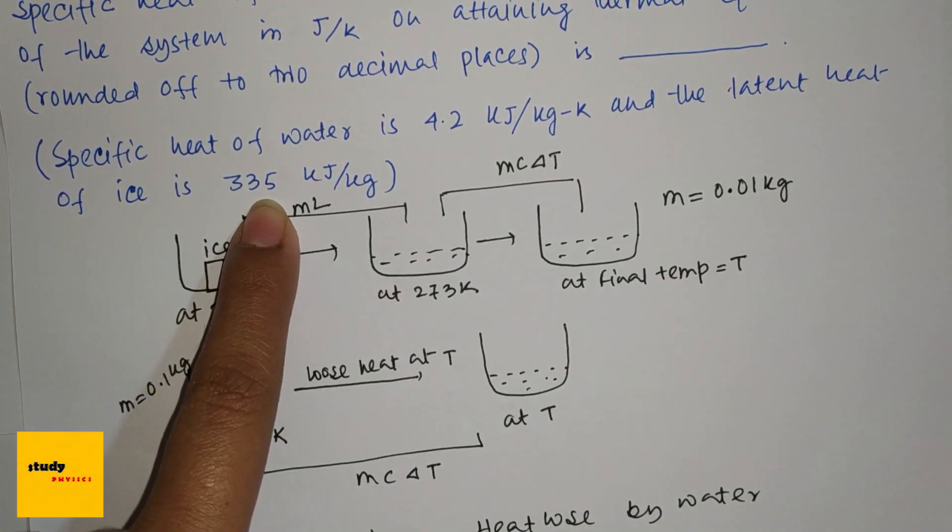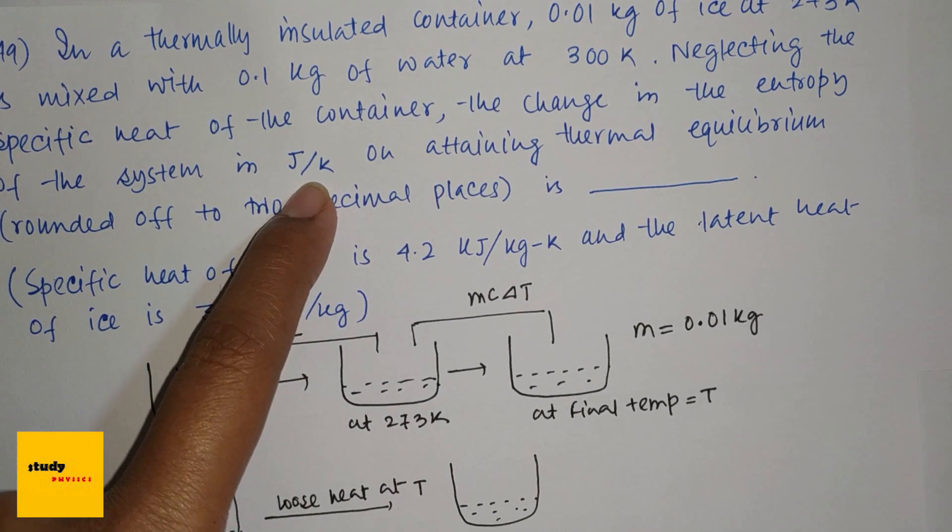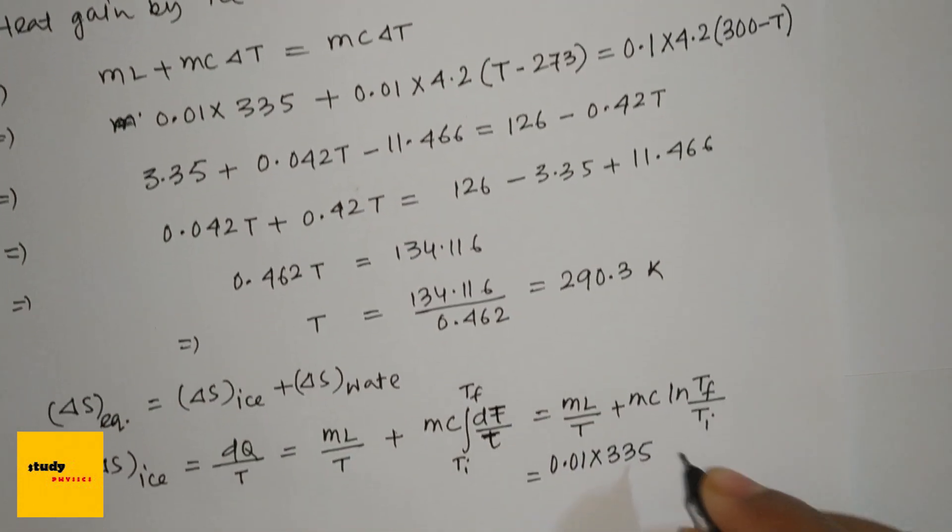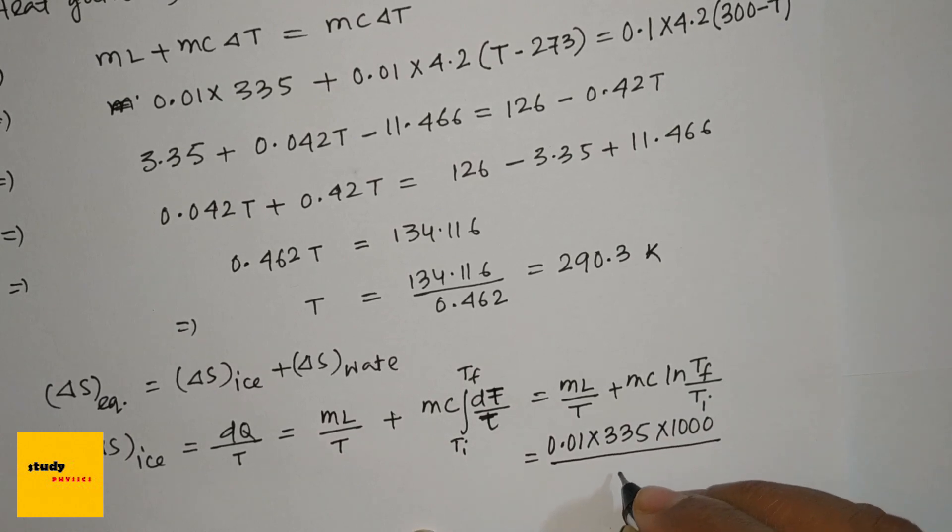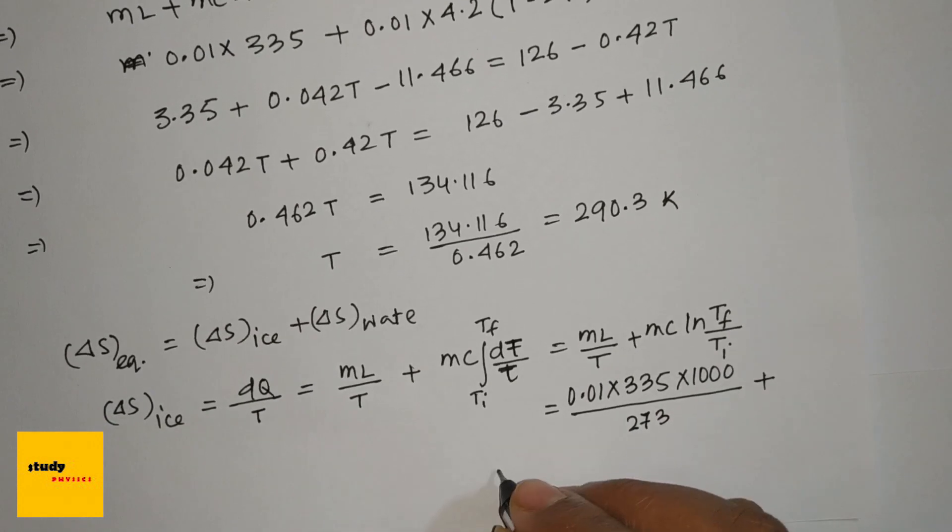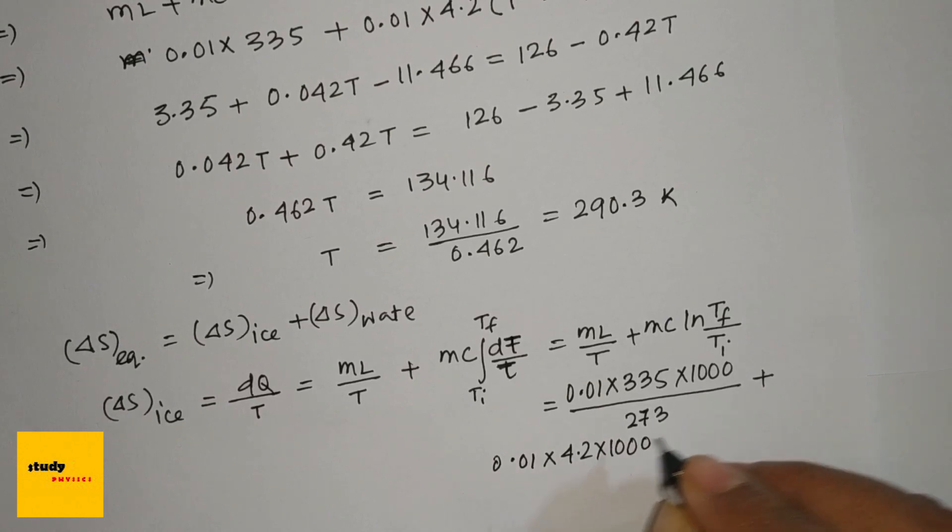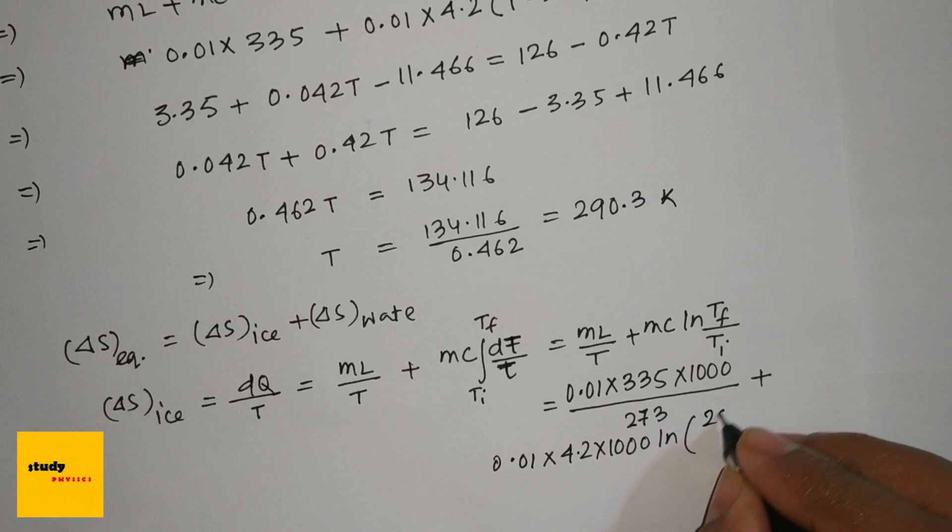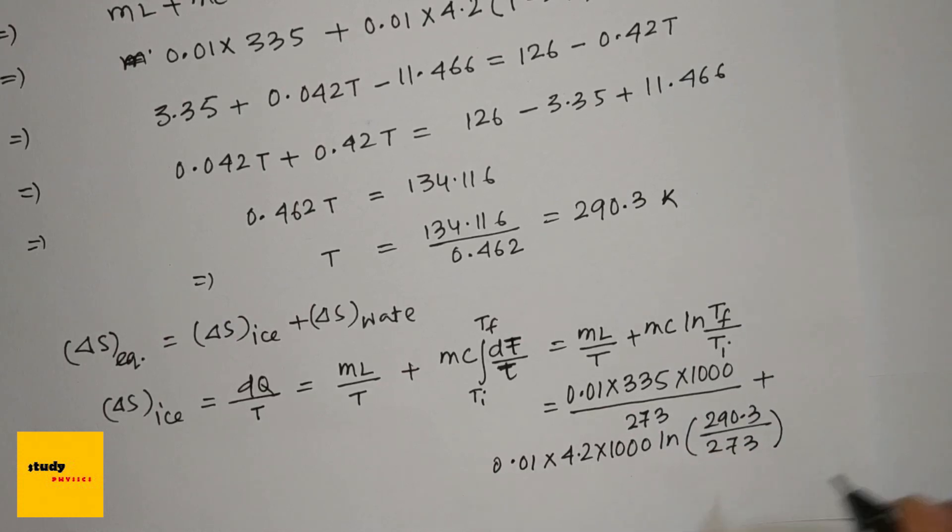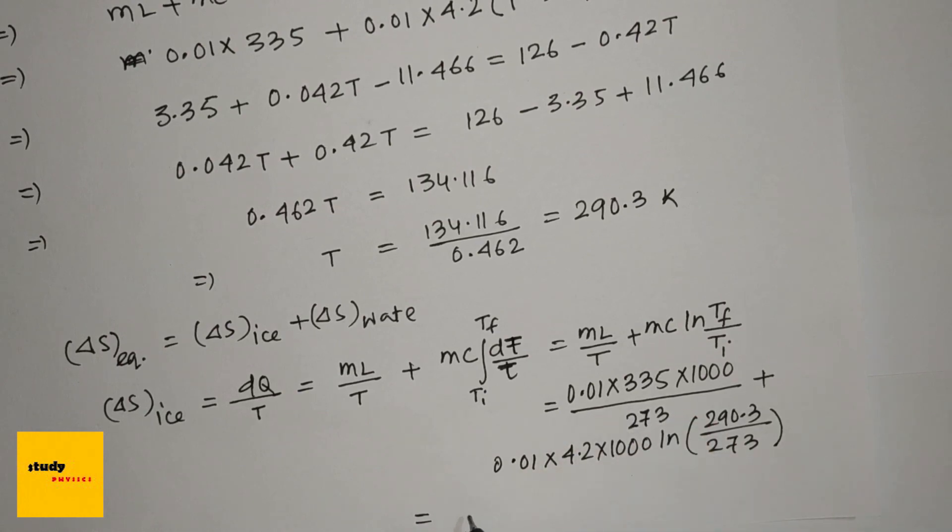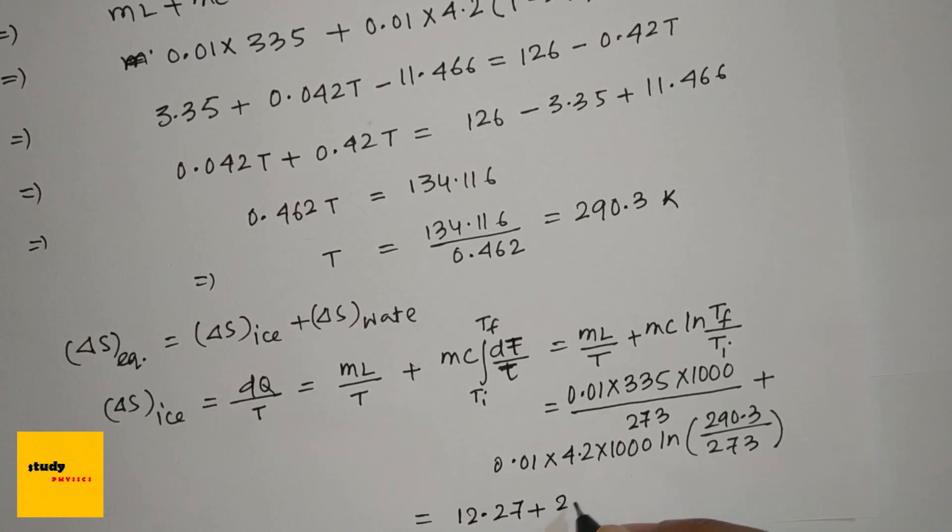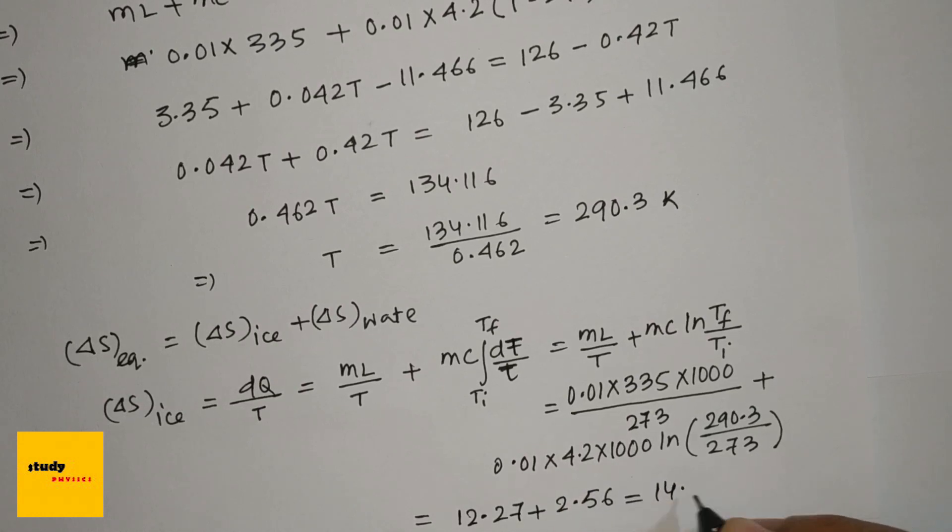So here they have asked joules per Kelvin, so we have to convert this into joules: 335 times 1000 divided by T is 273, plus 0.01 times 4.2 times 1000, ln of final temperature 290.3 divided by 273. So the first value will give 12.27 plus this will be 2.56, so 14.83.